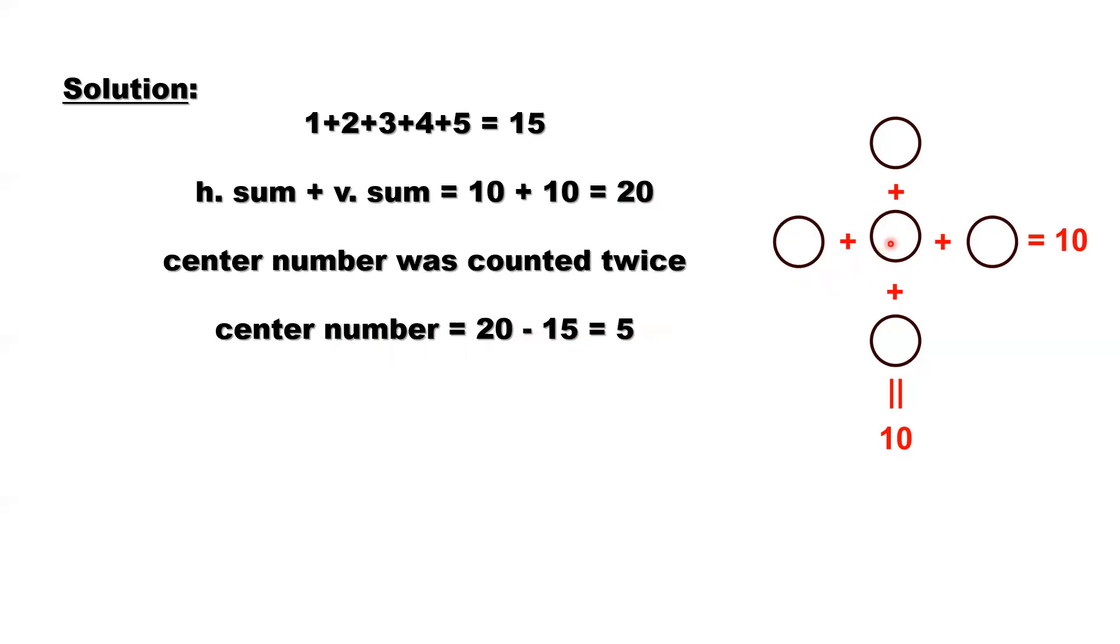After we figure out the center number, the remaining two numbers are easy to find out because the sum equals 10. You have 5 here. So 10 minus 5, you need to find the sum is 5. Which two numbers sum to 5?